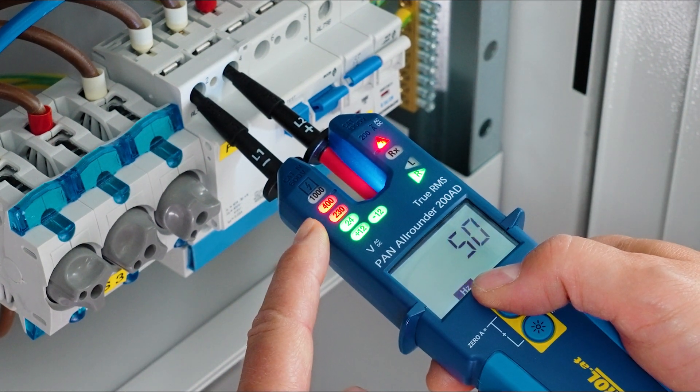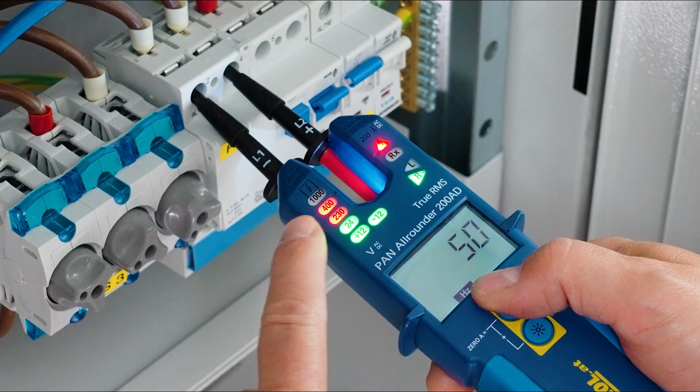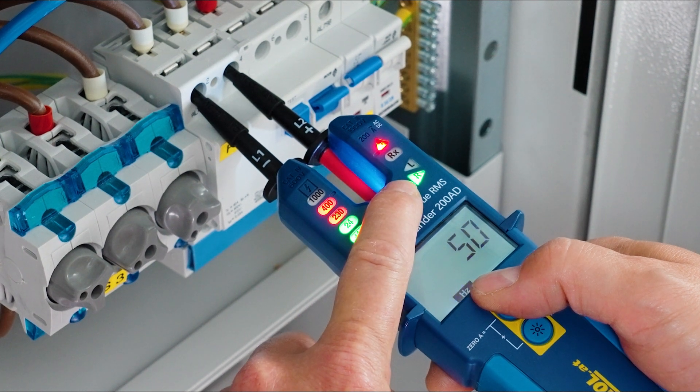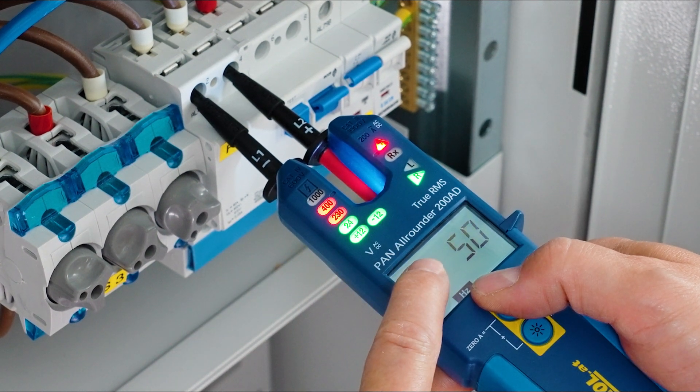Bright LEDs show the voltage range, an arrow indicates the direction of the rotary field and the display shows the frequency.